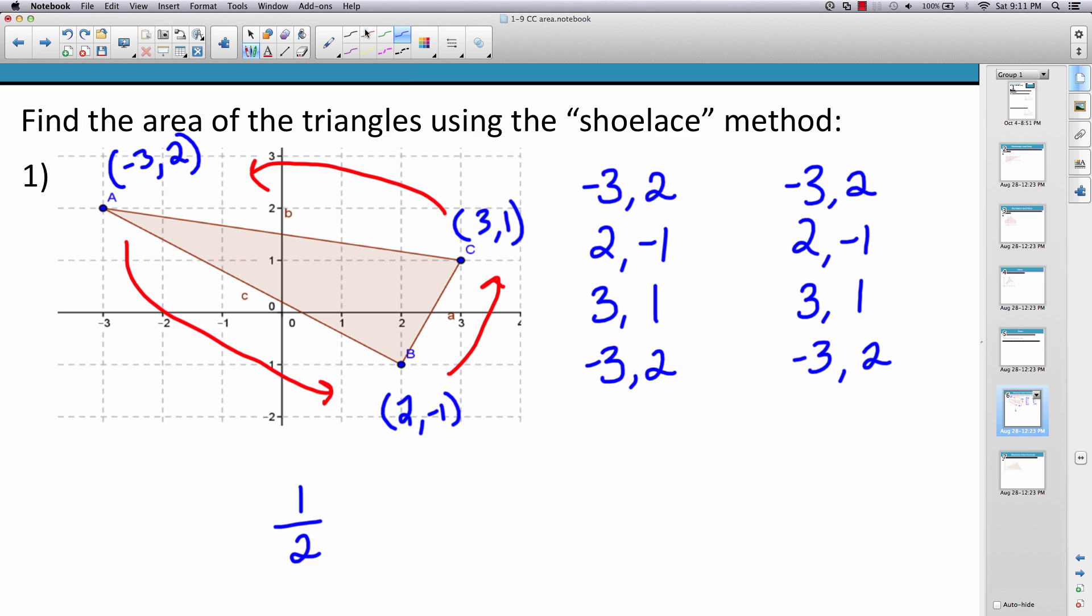...the sum of -3 times -1, plus 2 times 1, plus 3 times 2, minus the sum of 2 times 2, plus 3 times -1, plus -3 times 1. I think you can see where the term shoelace method comes from, so let's go ahead and do this arithmetic.